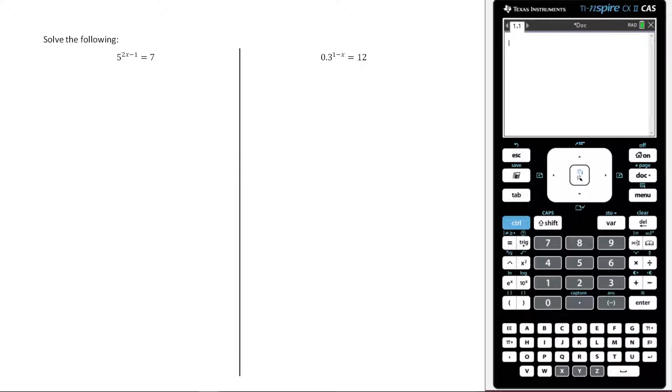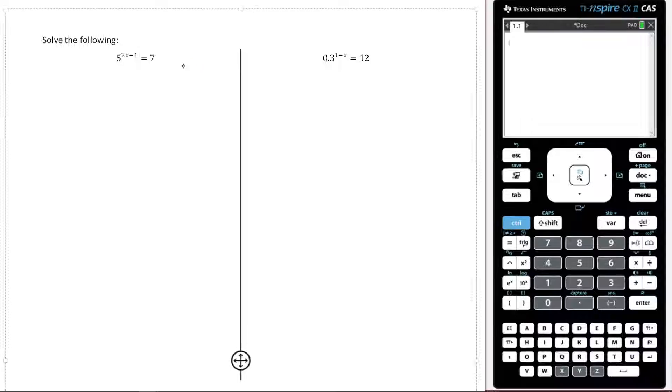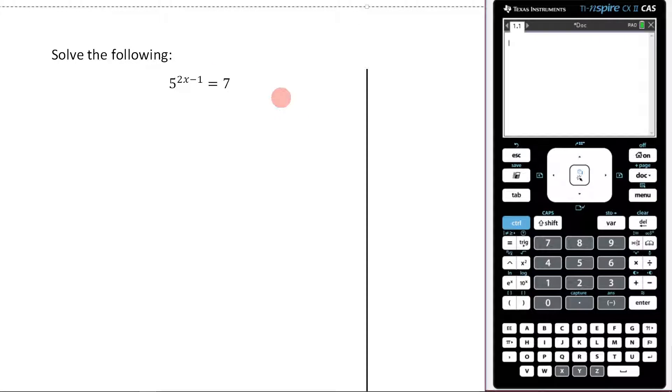We're now going to answer these questions before us. Let's have a go. So here we have solved the following: 5 raised to the 2x minus 1 equals 7.